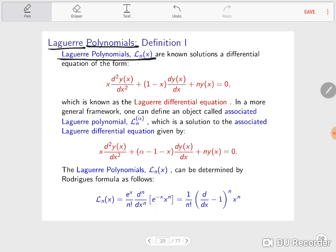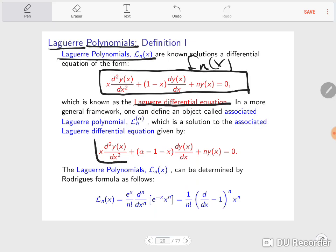The Laguerre polynomial L_n of x is a solution to the differential equation that I enclose here. This differential equation is called the Laguerre differential equation. One can extend this differential equation to what is called the associated Laguerre differential equation that I enclose here, with solutions known as the associated Laguerre polynomial that I circle here.